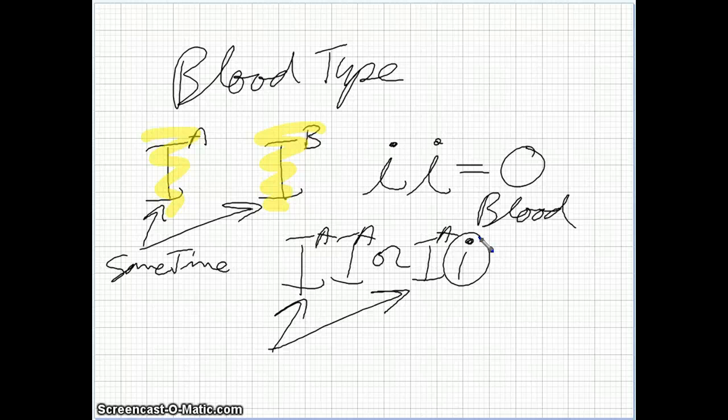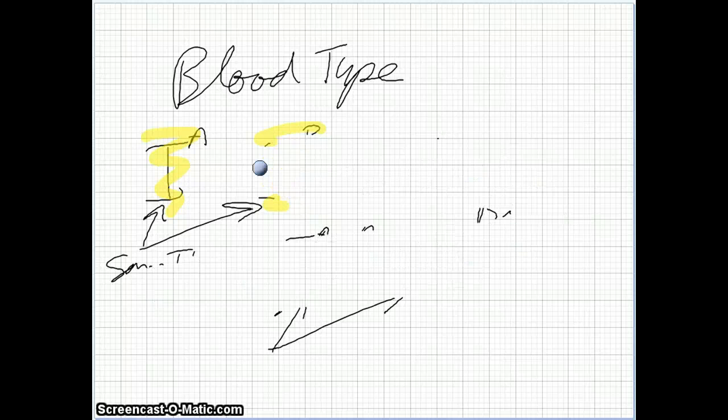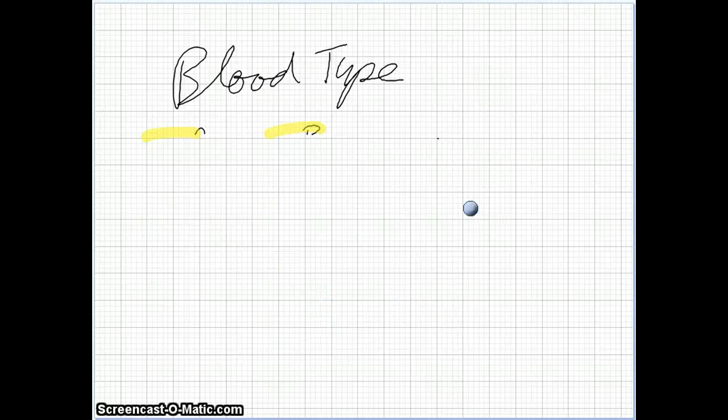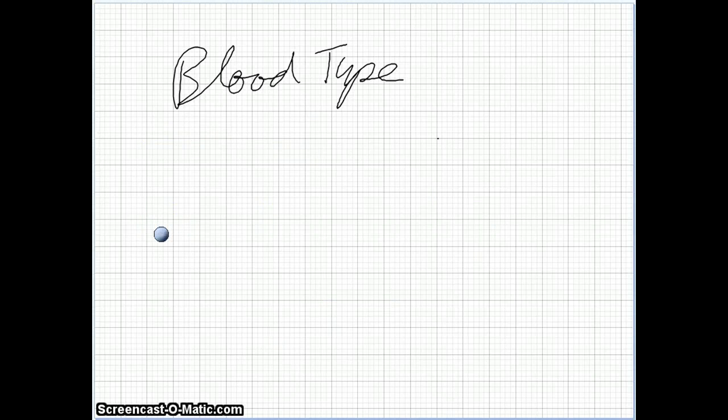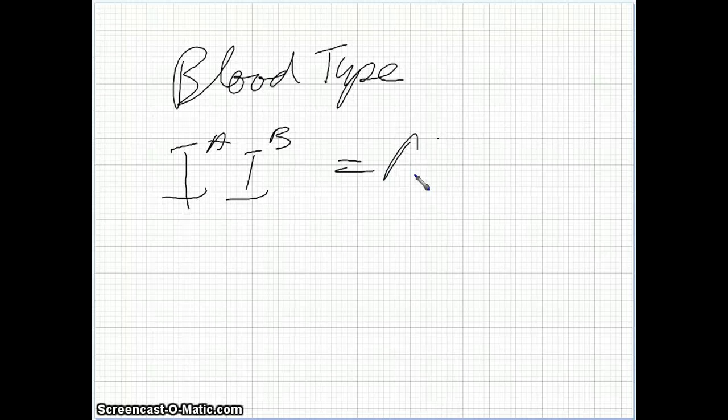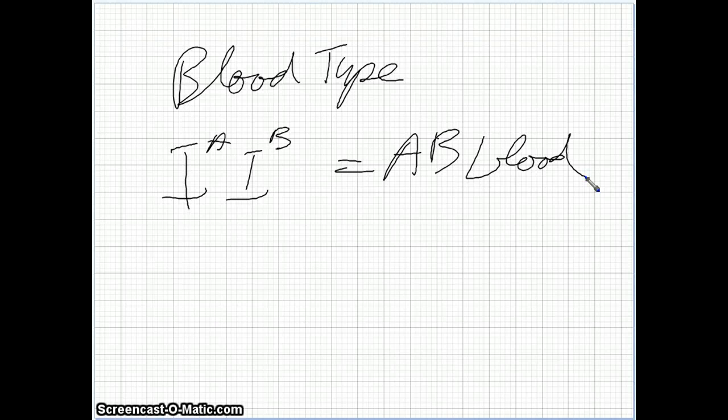But a person who has AB blood, it's a different situation, because they have both of those alleles. So let's clear up here and look at AB real quick. So this would be a great test question to have. If you have IA, IB, this means you have AB blood, but your child could not have O blood, because you're going to give your child either the A or the B. There is no way for this person to give their child a little i, so the child can never have O blood if either parent has AB. So that's important to remember.